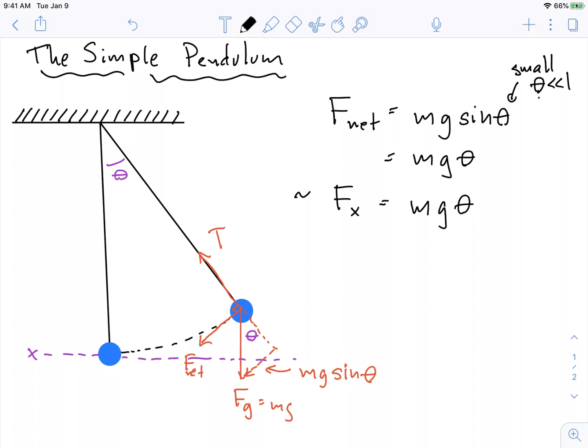But with that, we also notice that if this angle is small, then this distance and this distance are pretty close to each other. Those are pretty close to each other. This is some distance x. And this is the arc length of this.